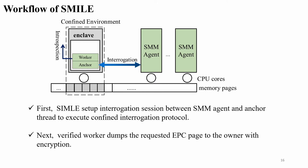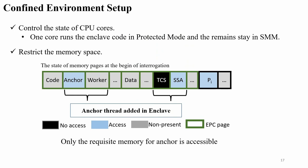We will introduce the workflow of SMILE. First, SMILE sets up the interrogation session between the SMM engine and ANC-G to execute the Confined Environment Protocol. Next, the verified worker dumps the requested EPC page to the owner with verification. To support the Confined Interrogation Protocol, we need to set up the Confined Environment in two steps: the first step is to control the system status of the CPU cores, ensuring one core runs the enclave code in the protected model while the remainder stays in SMM. The second step is to restrict the enclave execution memory space so that the enclave can only run the ANC code page and the SSA page, outputting data to the shared buffer page.